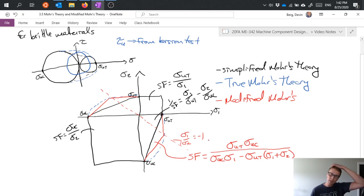and so this kind of complicated looking equation is what defines the safety factor if we're in quadrants 2 or quadrant 4 under the modified Mohr's theory. So it's a little bit uglier, a little bit messier equation but in general all it's doing is trying to mathematically describe this shape that we've drawn using this 45 degree angle line and where it intersects with the true Mohr's theory